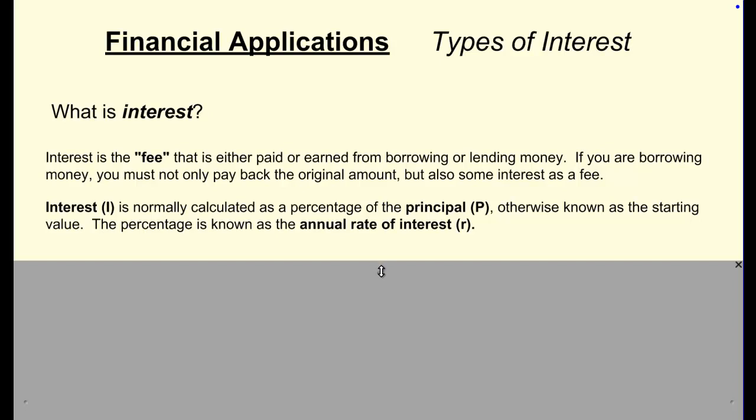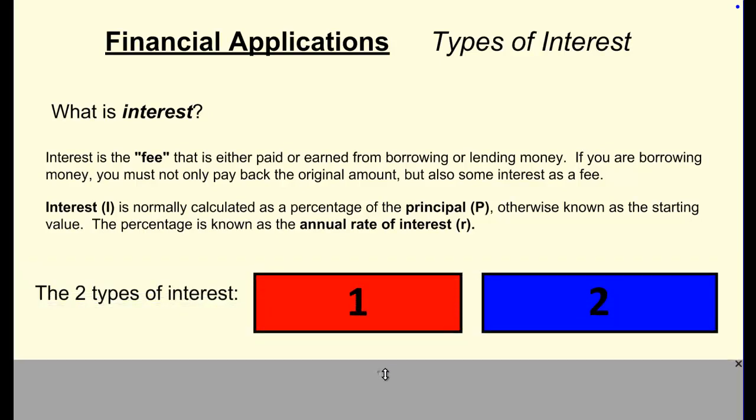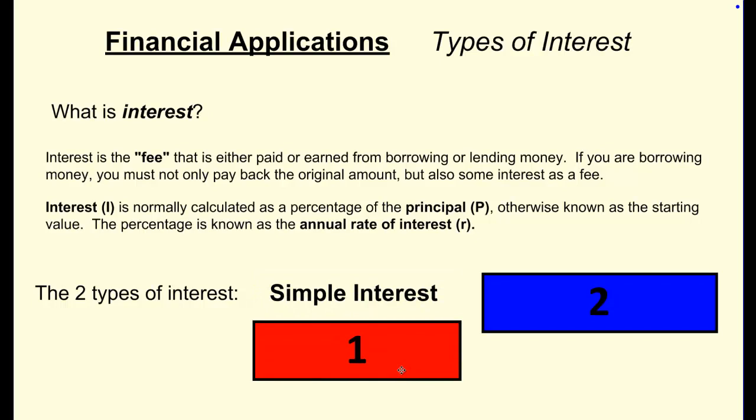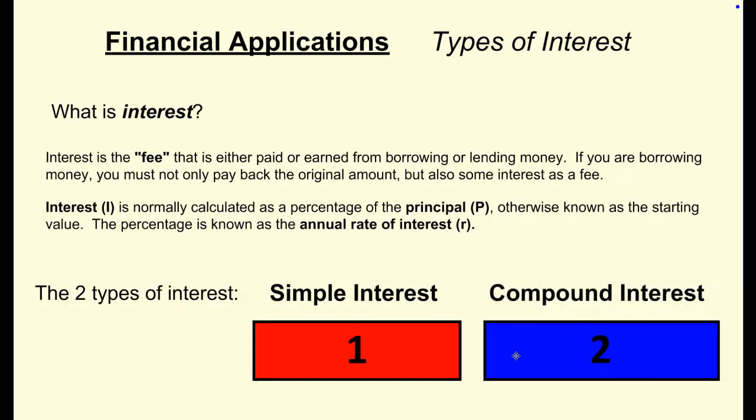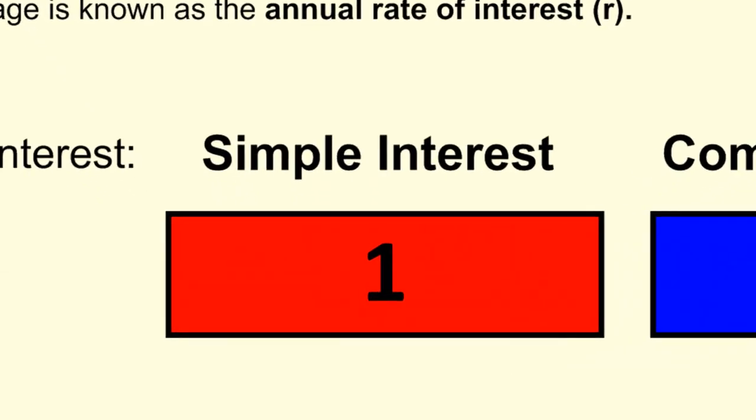In the world of interest there are two different types. One type of interest that we're going to discuss first is called simple interest. You could say it's the easier of the two. The second type of interest that we're going to discuss in a future lesson is called compound interest. Let's get to what simple interest is.